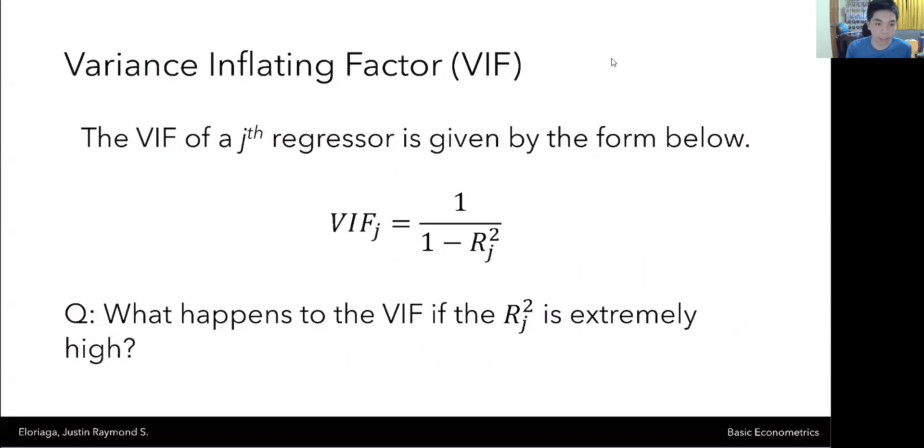Formulaically, the variance inflating factor is just equal to 1 over 1 minus R squared of the auxiliary regression. We discussed this concept of an auxiliary regression, which is just a type of regression to test certain statistical properties like multicollinearity. In this particular case, we will have multiple VIFs for each independent variable because we have one auxiliary regression for each independent variable.